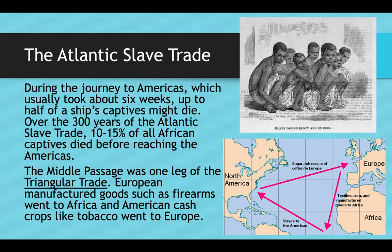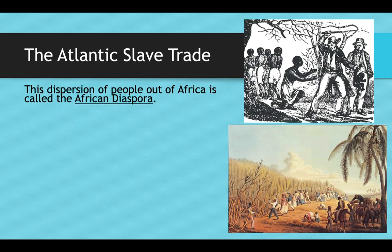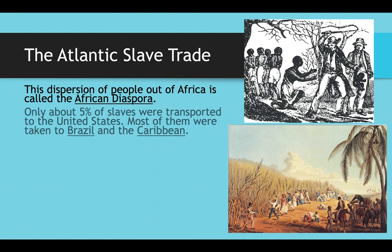The trip to the New World would last anywhere from six weeks to three months, and during this time up to half of a ship's captives might die, depending on how tightly they were packed in. This dispersion of people out of Africa is called the African diaspora — diaspora meaning a dispersion of people from a certain location to a place that's not their home — and this was a forced one.